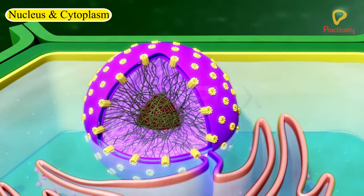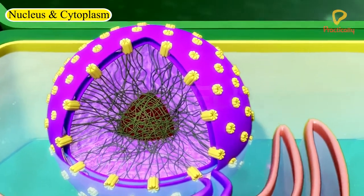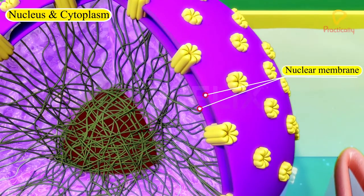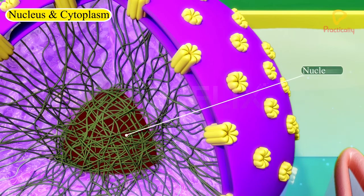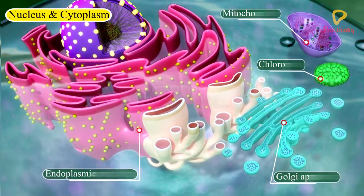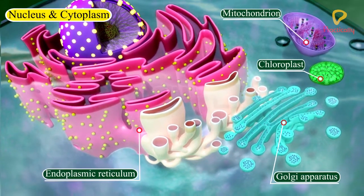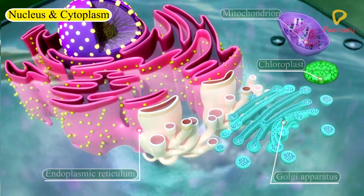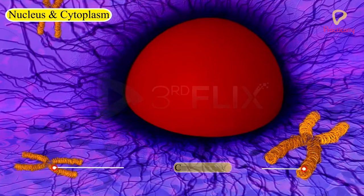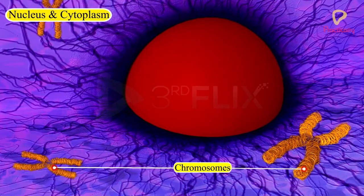Organisms with cells having a nuclear membrane are called eukaryotes. They contain a nucleolus and membrane-bound organelles in their cytoplasm, and they have more than one chromosome.